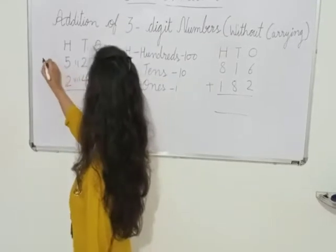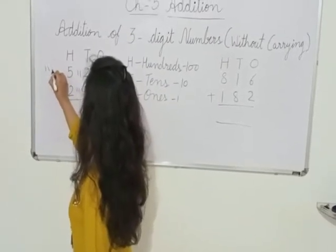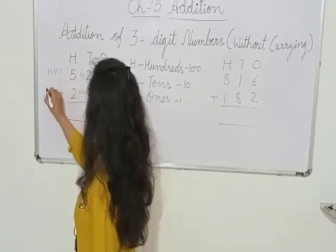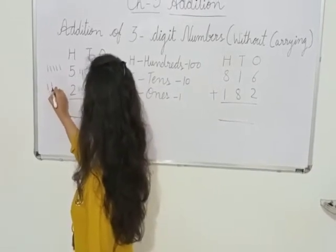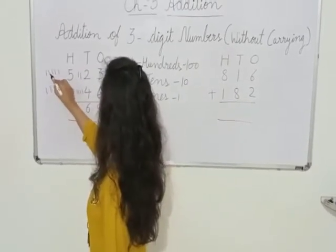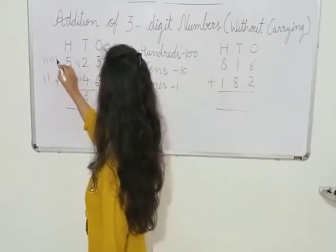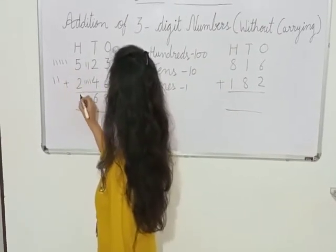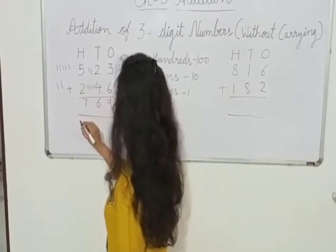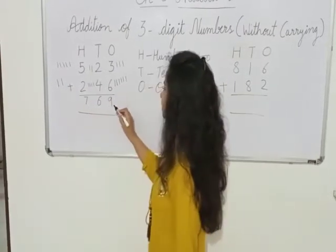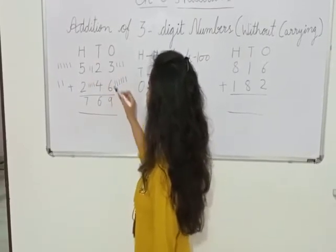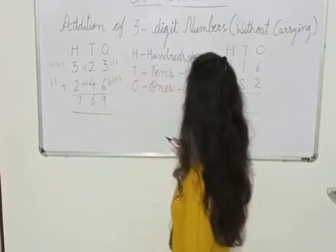Here we have 5, we will draw 5 lines: 1, 2, 3, 4, 5. Here we have 2, we will draw 2 lines: 1, 2. Now let's count — how many lines are there? 1, 2, 3, 4, 5, 6, 7. So we will write down 7 here. So what is our answer? 769. 7 at 100's place, 6 at 10's place and 9 at 1's place.